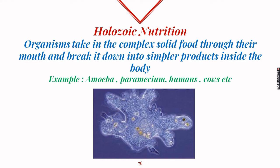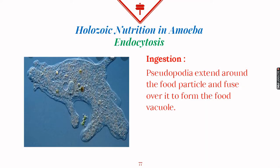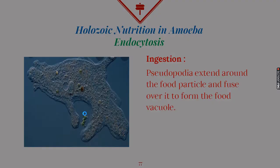We will now study holozoic mode of nutrition in the case of amoeba. Due to the irregular shape of the body and the flexible plasma membrane, amoeba can easily take in solid food through the cell membrane, a process called endocytosis. Ingestion in amoeba occurs with the help of pseudopodia, which are extended on both sides of the food particle and then fuse with each other, forming a food vacuole.